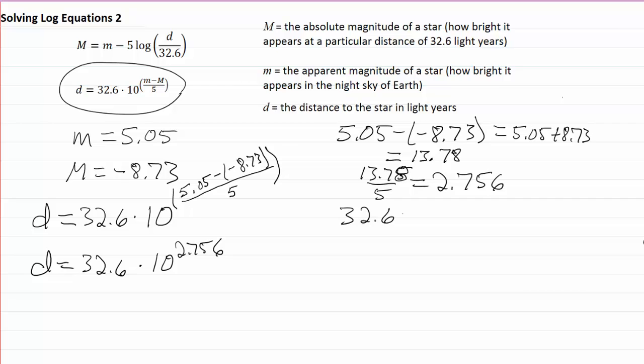32.6, hit the multiplication button. Then to get that 10 to the power, it's a couple of keystrokes. You do the second key and the log key in sequence. You may notice above the log key, it has a 10 to the x there. When you get through this part of the calculation, your display will show something.